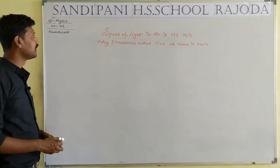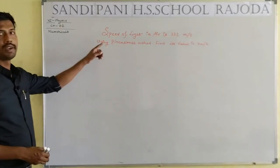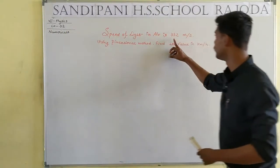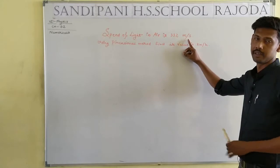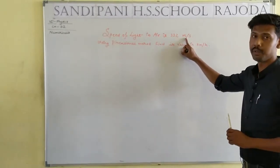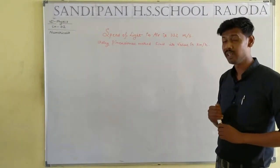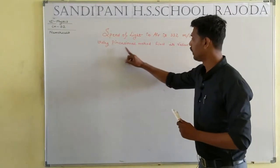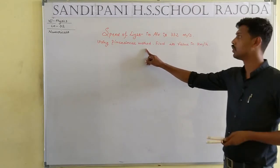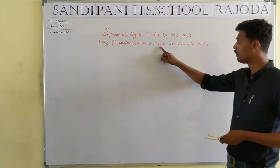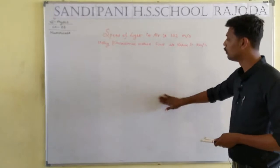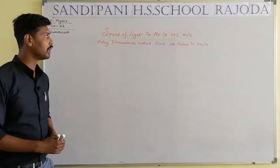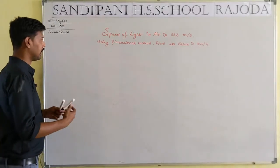Now we take another question. The speed of sound in air is equal to 332 meters per second, which is in SI units. Using the dimensional method, convert this value into kilometers per hour — that means convert meter per second into kilometer per hour.